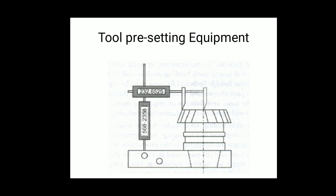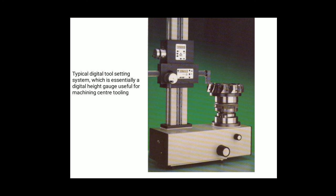You can see the actual standard tool pre-setting equipment, which has vertical and horizontal readings. By using these readings you can set the tool at the required position. A typical digital tool setting system, which is essentially a digital height gauge, is useful for machining center tooling. There are two gauges — one horizontal and one vertical — by which we can easily set the tool.